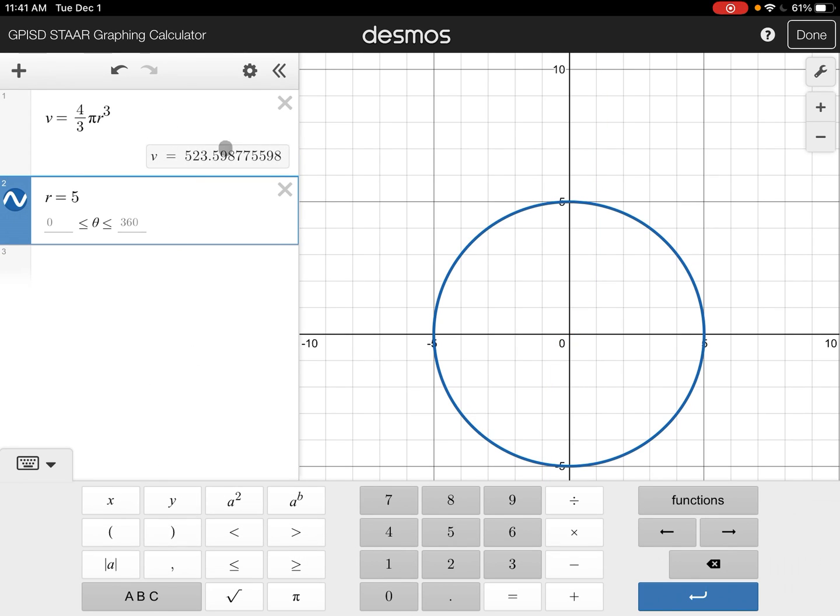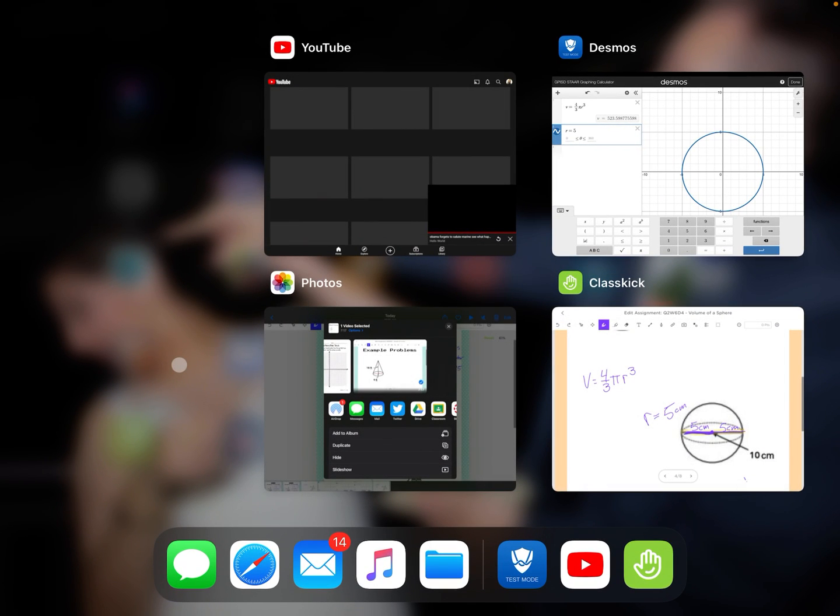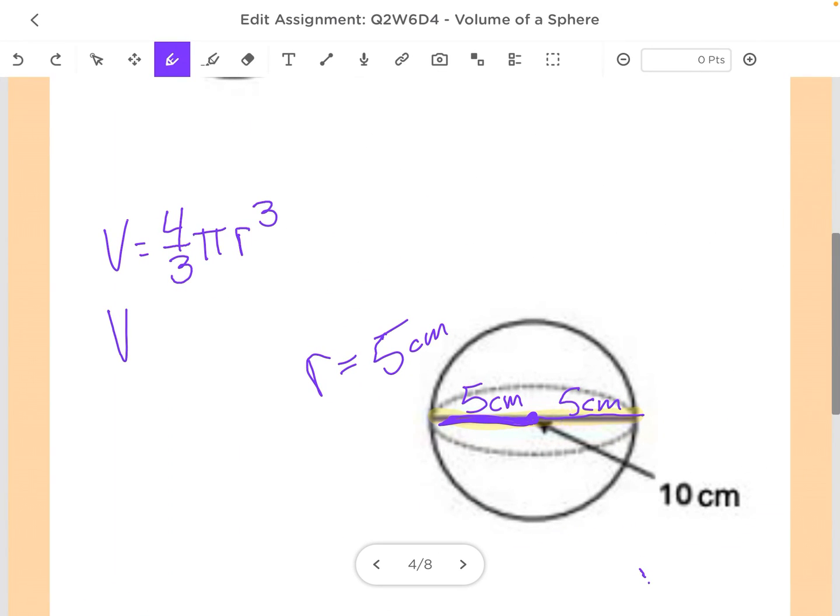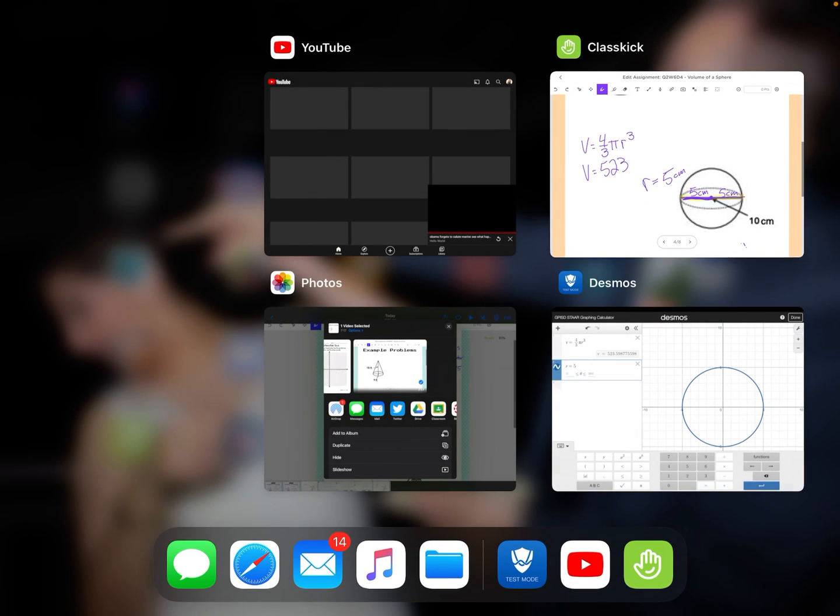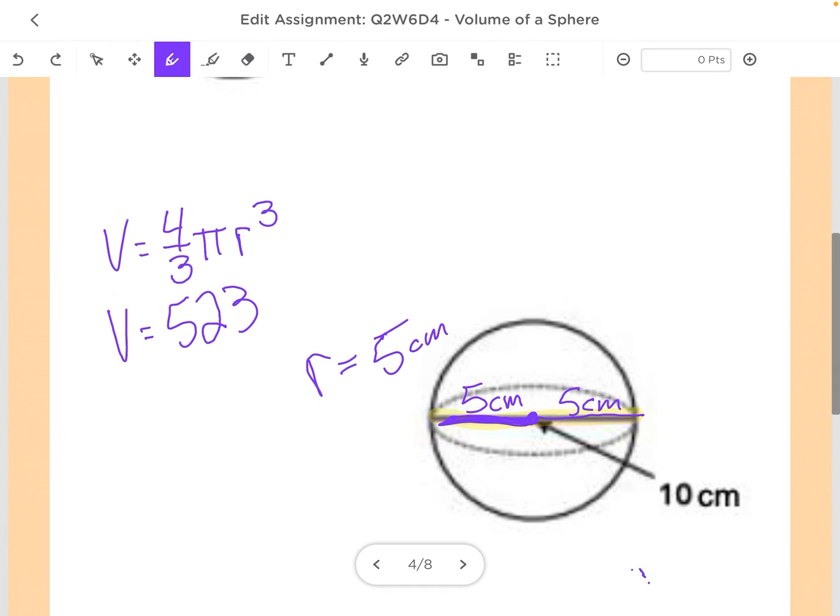And it goes ahead and gives me that volume. So my volume would be 523.598, so we'll round that to 0.60. So volume equals 523.60 centimeters cubed.